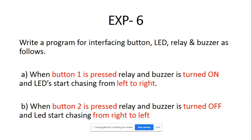These four peripherals — one input device (button) and three output devices (LED, relay, buzzer) — are attached to the PIC microcontroller. We want to achieve two tasks. First task: when button one is pressed, relay and buzzer must turn on, and the LEDs must chase from left to right. We have four LEDs (LED1, LED2, LED3, LED4). Second task: relay and buzzer must be off, and LEDs start chasing in the opposite direction, right to left.